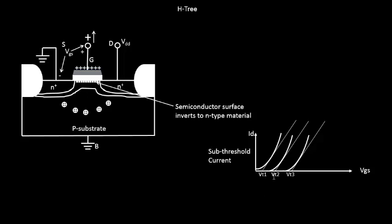When we say threshold voltage, the threshold voltage is that amount of gate voltage at which you see this semiconductor surface inverts to an N-type material.